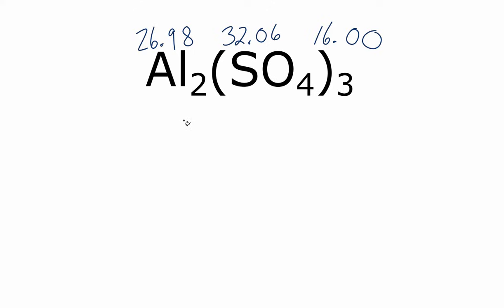Next, we're going to add these up and multiply by the subscripts, and we've got to pay particular attention to these parentheses here. So I have 26.98 for the aluminum, and I have two aluminum atoms.